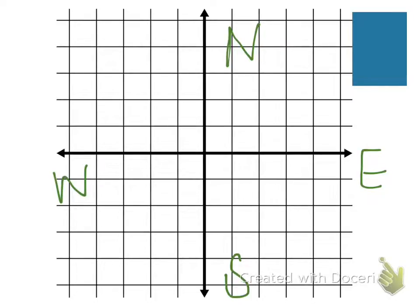On our coordinate system, which two cardinal directions are going to be positive coordinates? North and east. And south and west are always going to be negative coordinates. Moving east is always positive, moving north is positive, and south and west are going to be negative directions. Our origin is at zero-zero.